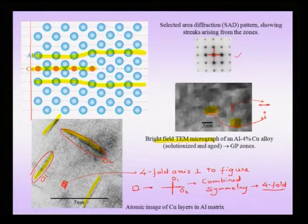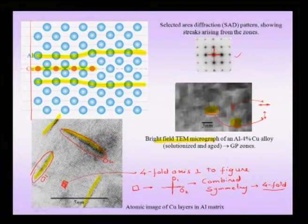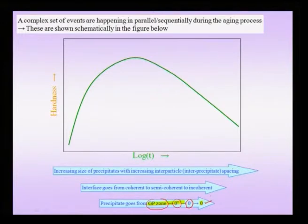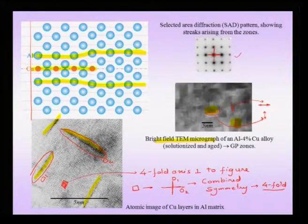In the sequence of precipitations, we start with GP zones, then obtain the metastable theta double prime precipitate, then theta prime, and finally the equilibrium theta precipitate. We would note that we do not want to age so long that we produce the equilibrium theta precipitate.